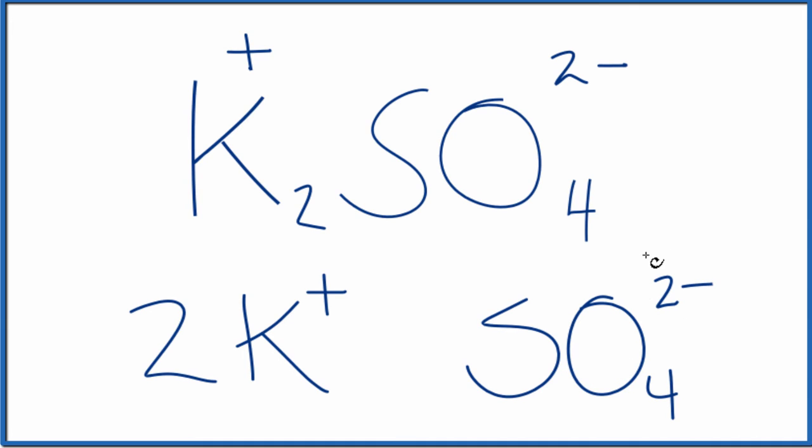There are a total of three ions in K2SO4, two potassium ions and one sulfate ion. This is Dr. B. Thanks for watching.